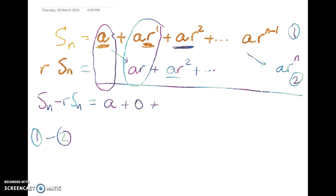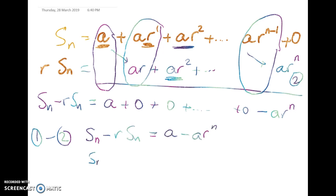So that leaves me with nothing. This one, ar squared take away ar squared gives me 0 and so on. Here I've got nothing and in here what have I got at the end? Well I can actually write that as 0 in there. And so I've got minus ar to the n. So you should be starting to feel quite excited at this point because what we've got on the left hand side is Sn minus r Sn is equal to a minus ar to the n.